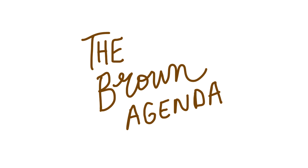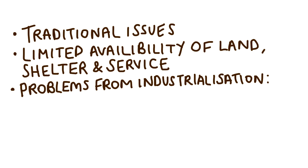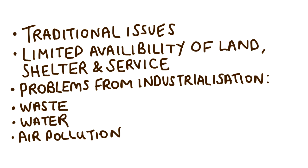Some cities are affected by the Brown Agenda — a mix of problems brought about by rapid urban development. Traditional issues include limited availability of land, shelter and services, plus problems resulting from industrialisation such as toxic waste, water and air pollution.